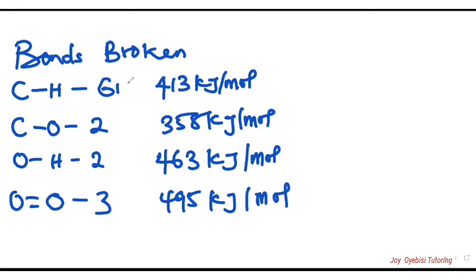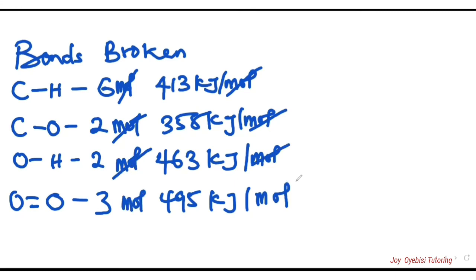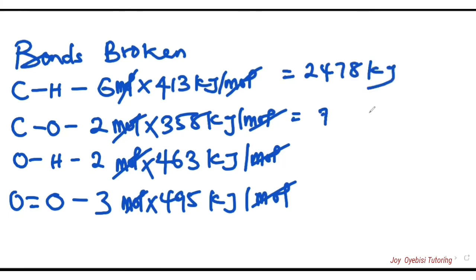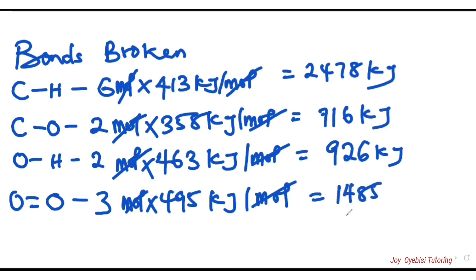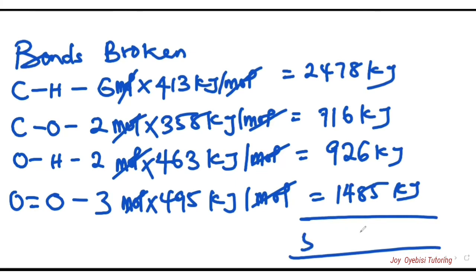Note that each bond enthalpy is per mole, so the moles cancel out leaving kilojoules. For bonds broken: 6 × 413 = 2478 kJ; 2 × 358 = 716 kJ; 2 × 463 = 926 kJ (shown as 296, but note possible error); and 3 × 495 = 1485 kJ. Adding these up gives 5605 kJ total for bonds broken.